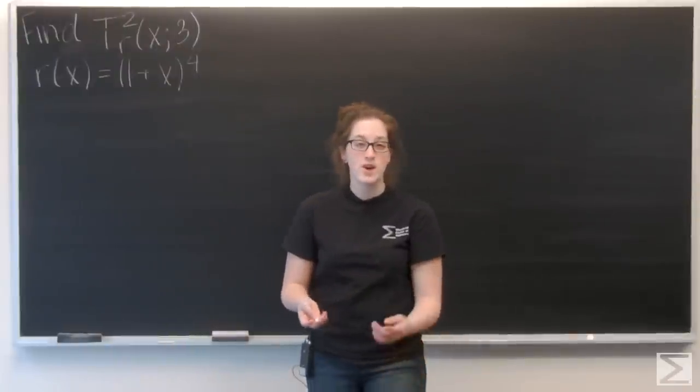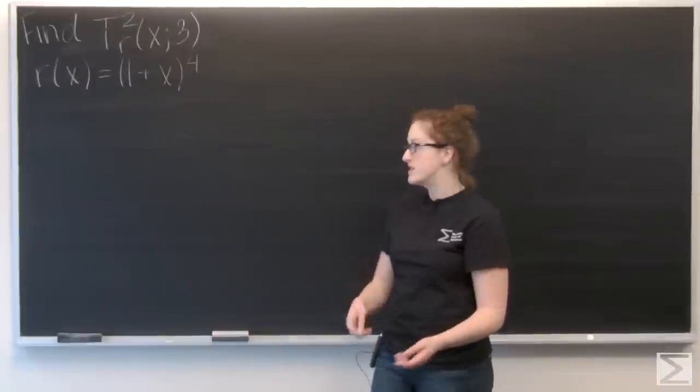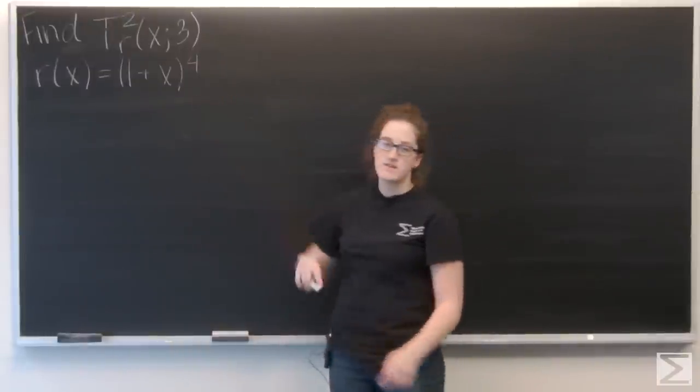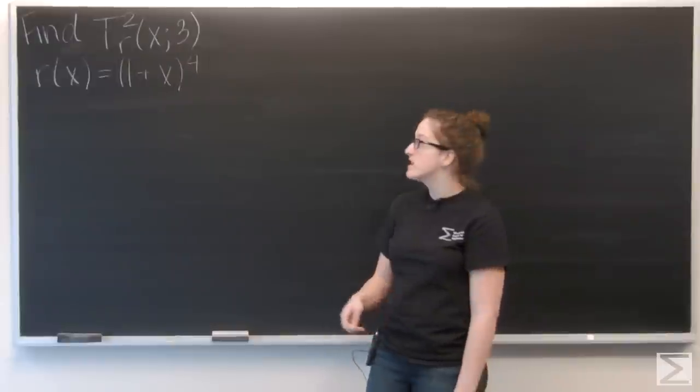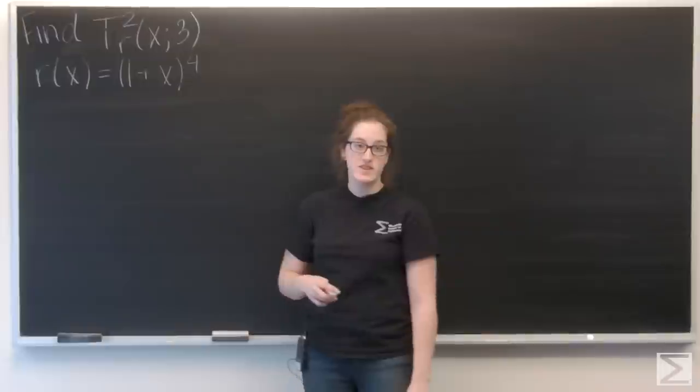Okay, so for this problem, we're asked to make a second order Taylor series for r(x), which is quantity (1+x) to the fourth, and we want that Taylor series to be centered at 3.